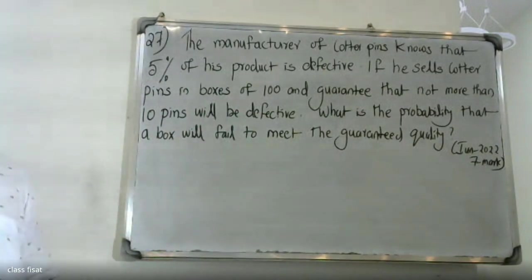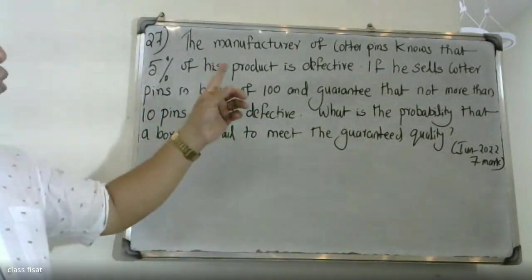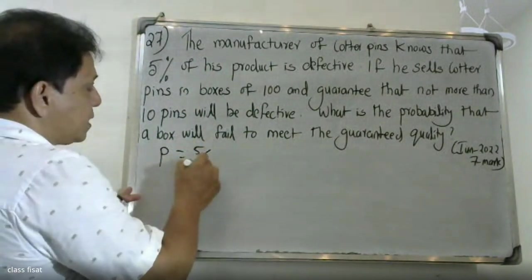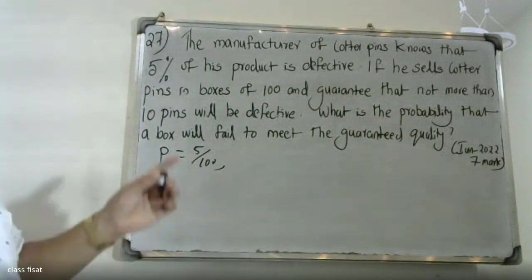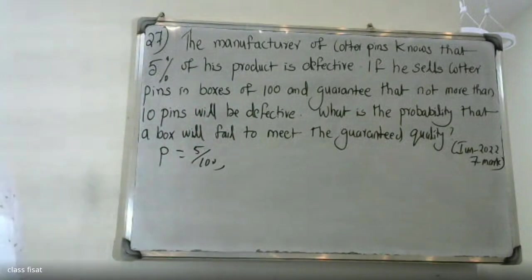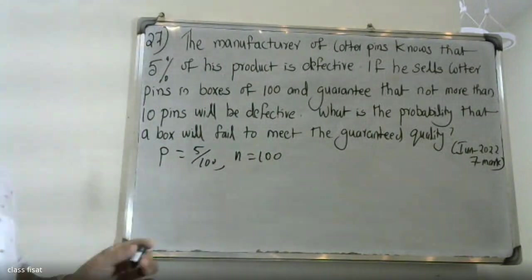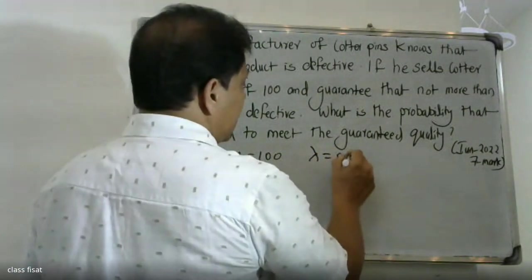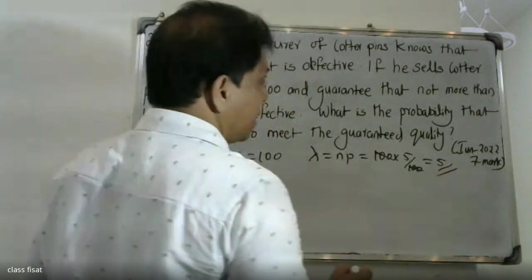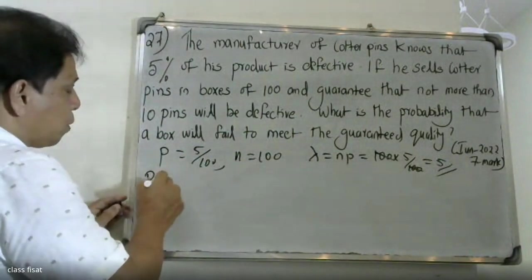The manufacturer of quarter pins knows that five percent of his product is defective. If we note n equals 100 and p equals five percent, that is 5 by 100, then lambda equals np equals 100 into 0.05, which equals 5. We use the Poisson distribution in this situation.